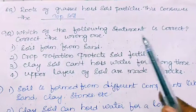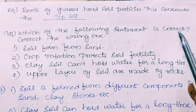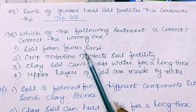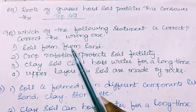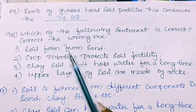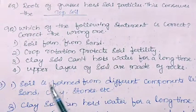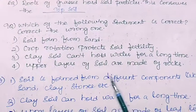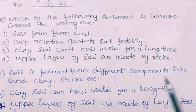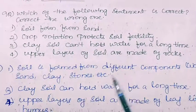Ninth question: Which of the following statements is correct, and if wrong, correct the wrong one. First statement: Soil is formed from sand. This is a wrong statement. Soil is formed from different components like sand, clay, stones, etc.